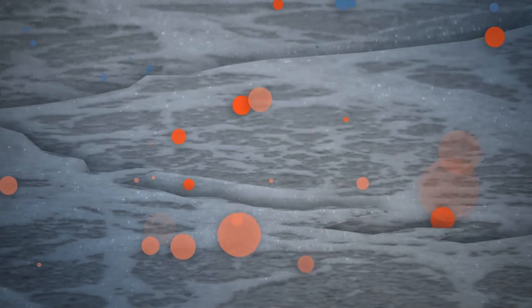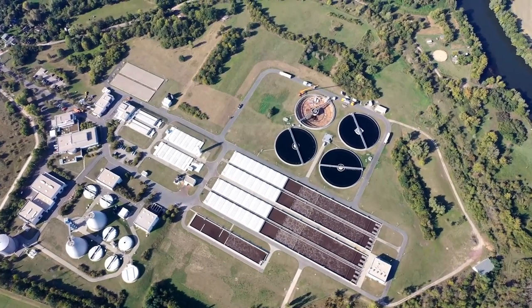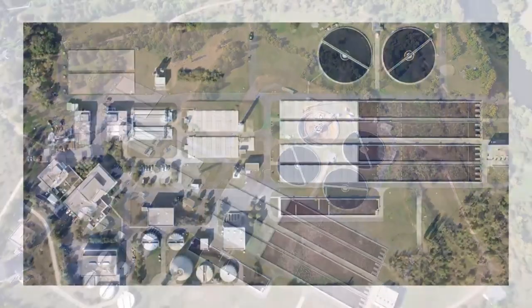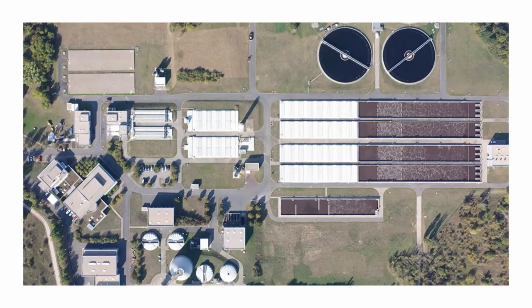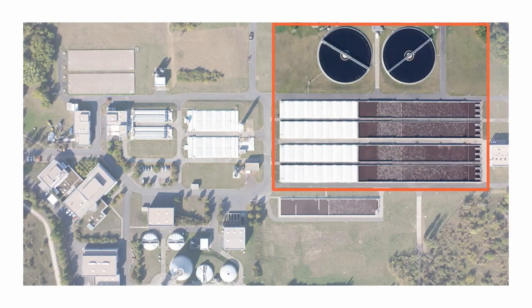Wastewater contains dissolved and undissolved substances, which can be of organic or inorganic origin. In some cases, wastewater also contains heavy metals and salts, which are dissolved in the water. Here, you can see our modern wastewater treatment plant in Huller. Let's take a closer look at its structure. The treatment plant consists of three areas: mechanical treatment, biological treatment and sludge treatment.